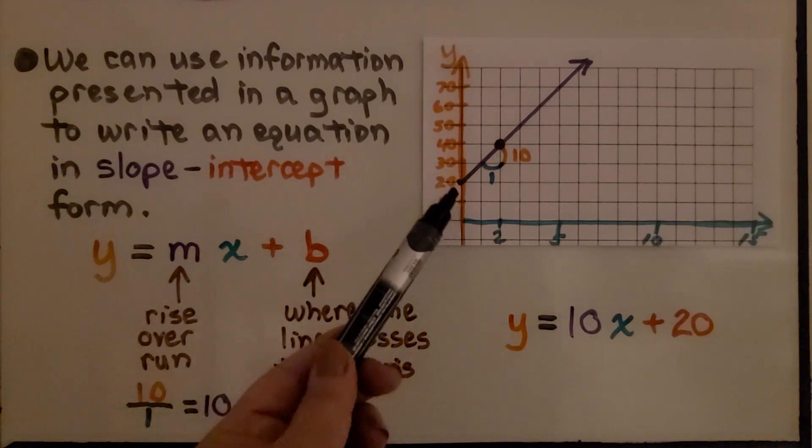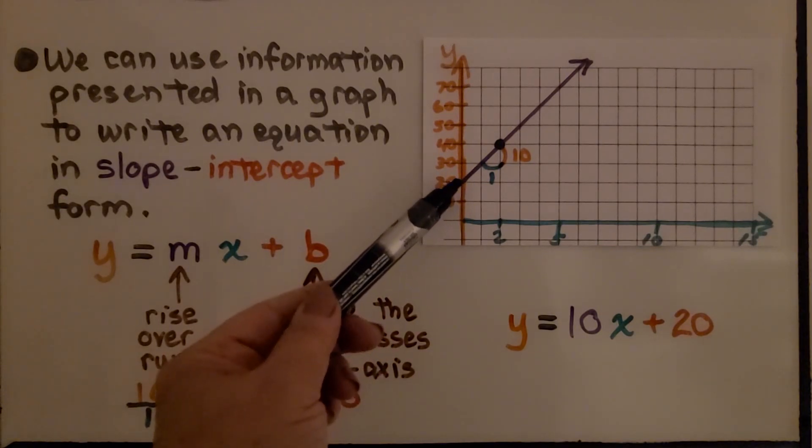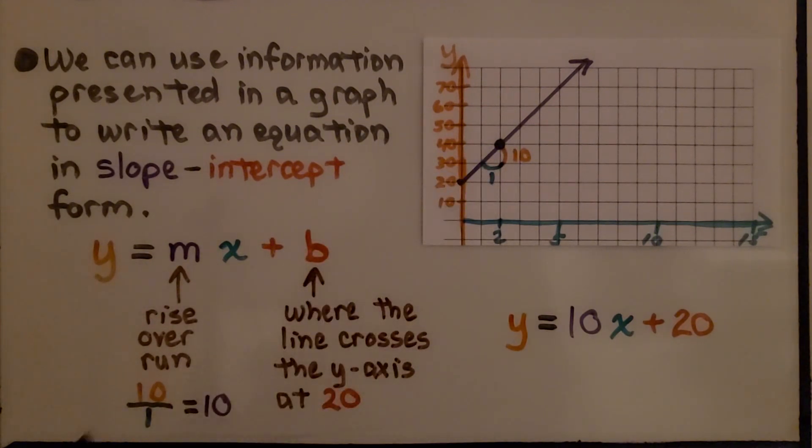Here if you look, we have this graph and we can see that the line starts at 20. We can also count the rise and the run for the slope. Remember, m is the rise over run and b is where the line crosses the y-axis at 20. Our equation would be y equals 10, our slope, x plus 20, where it crosses the y-axis.